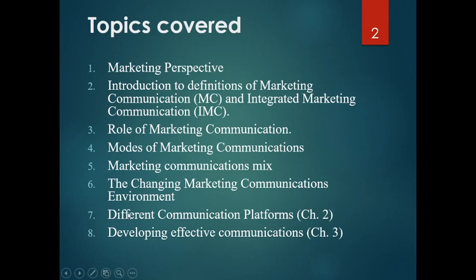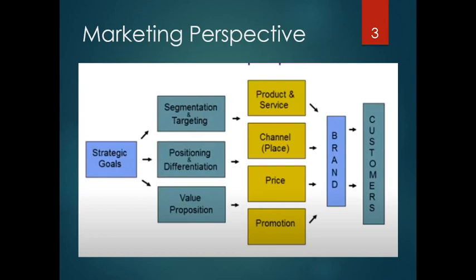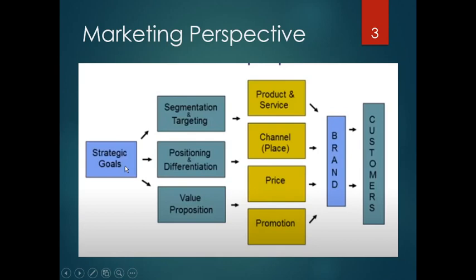The seventh topic will be discussed in chapter 2 and the eighth in chapter 3. First of all, we have to understand that the organization, before going for marketing, has to look at what are its strategic goals. That in turn depends upon segmentation, targeting, positioning, differentiation, and value proposition. All these things have to be seen in the context of revenue and profit, competition, working style, industry, and organization-related feedback. All these things have a direct or indirect impact on the marketing perspective.